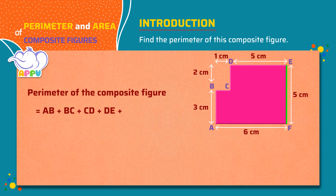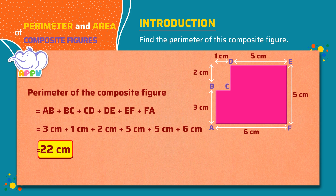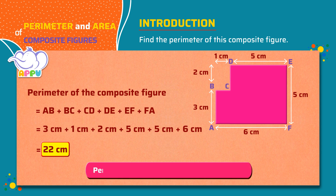...plus EF plus FA, which equals 3 centimeters plus 1 centimeter plus 2 centimeters plus 5 centimeters plus 5 centimeters plus 6 centimeters, equals 22 centimeters. So the perimeter of the composite figure is 22 centimeters. Let's see another example.